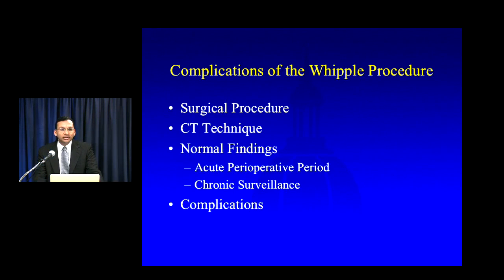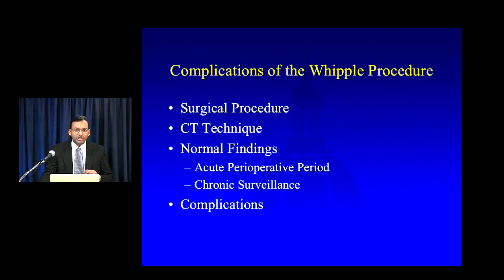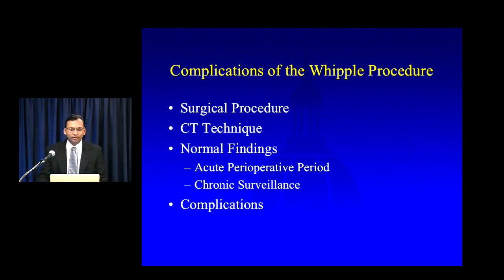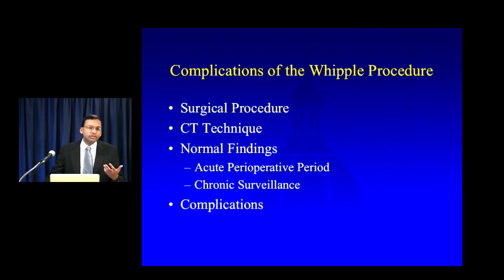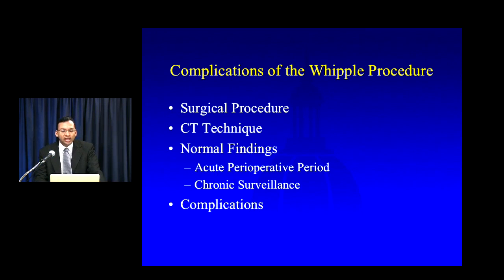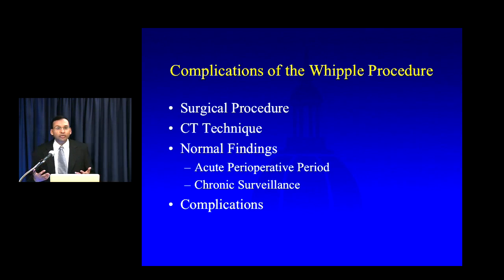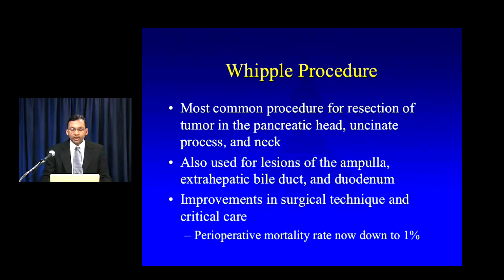Now, complications of the Whipple procedure. We'll start by talking about the surgical procedure itself, including the anastomoses and how the procedure is performed. We'll talk about CT technique, including how we typically image patients at Johns Hopkins who have had a prior Whipple procedure, normal findings, things not to confuse with pathology in both the acute perioperative period and during chronic surveillance. But we'll spend most of the lecture going into the various complications you might encounter when imaging these patients.